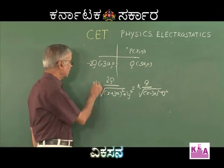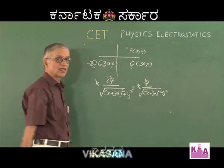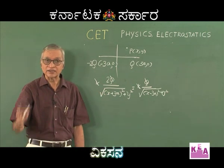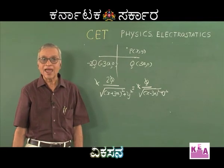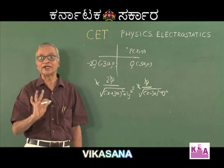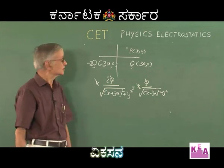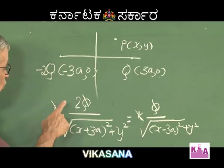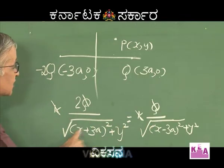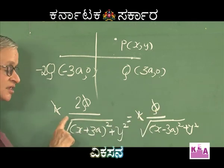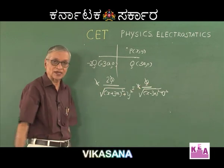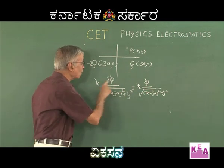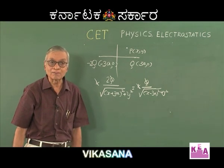Please note that k and q will cancel. In a regular board exam you would simplify fully, but in CET, elaborate workings should be avoided and you have to use logic. If you square both LHS and RHS, you get 4(x+3a)² on the left and (x−3a)² on the right. Expanding and rearranging: 4x² − x² = 3x² on the x terms, and 4y² − y² = 3y² on the y terms.